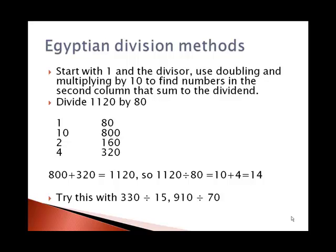I'm getting very close to 1,120. Then I'll double the 1 and the 80 to get 2 and 160. Then I'll double those to get 4 and 320. Now, 800 and 320 add together to give me 1,120. So I look over in the left column and I notice that I have a 10 and a 4. That means 1,120 divided by 80 is the sum of 10 and 4, which is 14. I'd like for you to try 330 divided by 15 and 910 divided by 70.